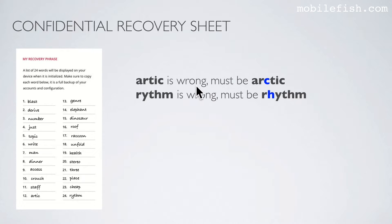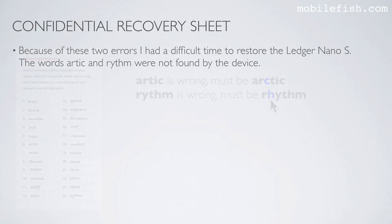Arctic and rhythm. The word arctic is wrong — it misses the letter C. And rhythm is wrong — it misses the letters A-G-E. Because of these two errors, I had a difficult time to restore the Ledger Nano S. The words arctic and rhythm were not found by the device.